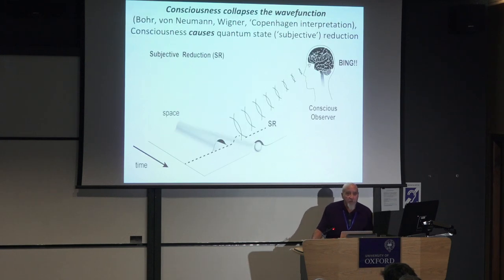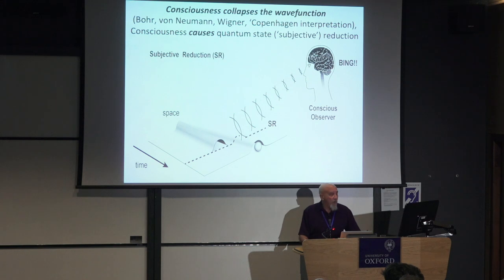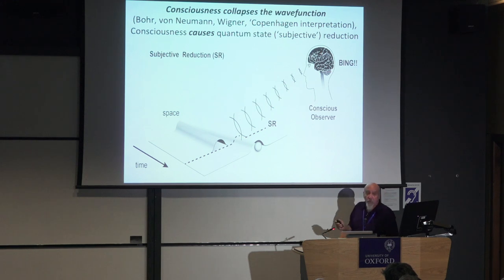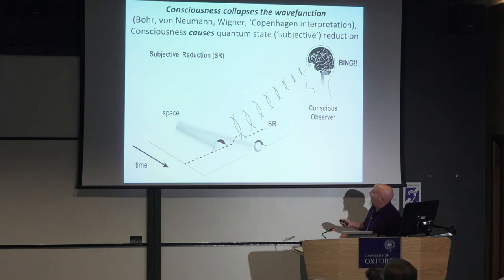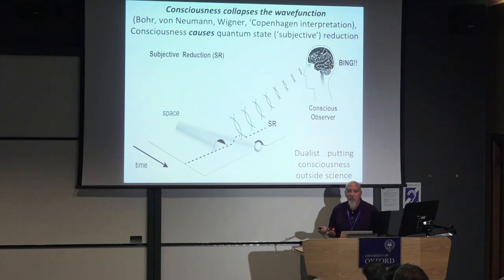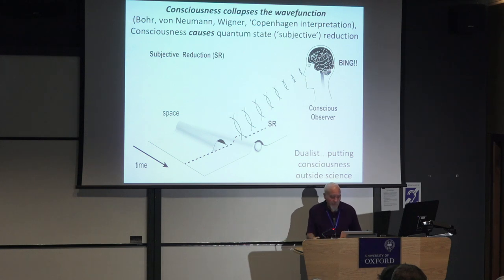Another interpretation is the von Neumann-Wigner-Copenhagen interpretation, in which consciousness collapses the wave function or causes quantum state reduction. I refer to this as subjective reduction as opposed to Roger's objective reduction. Consciousness causes collapse of the wave function, but this is dualist. It puts consciousness outside science. It's not really a scientific explanation — it was kind of a stop gap so they could continue doing experiments without worrying about the reality underneath.